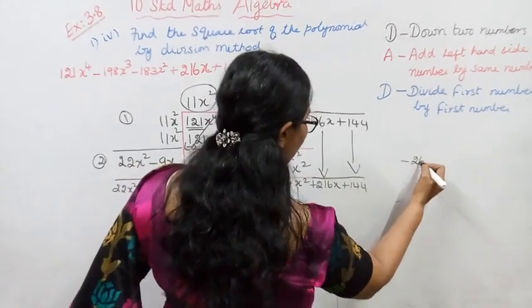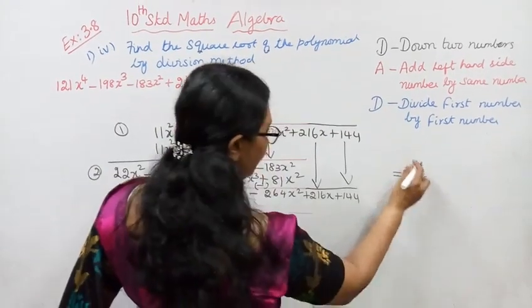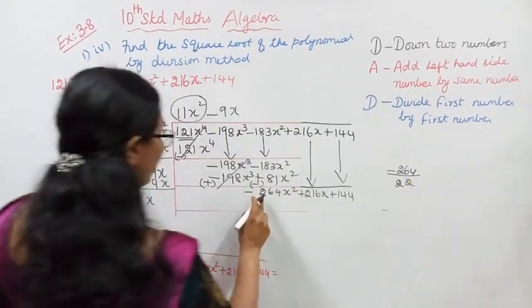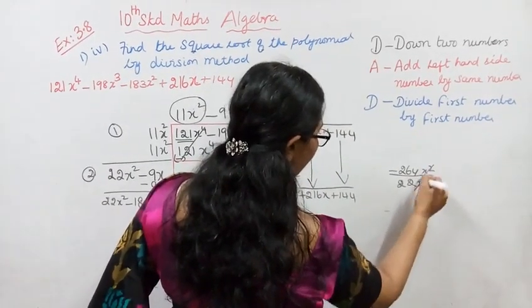-264 divided by 22. That is -264x² by 22x². x² and x² cancel. -12 times.